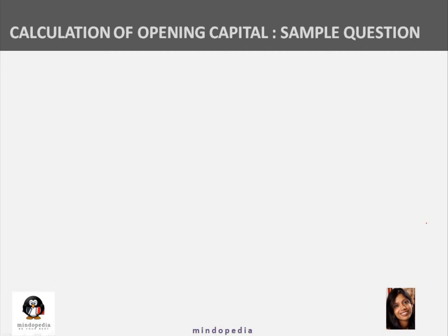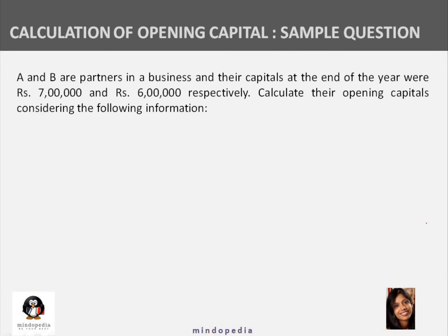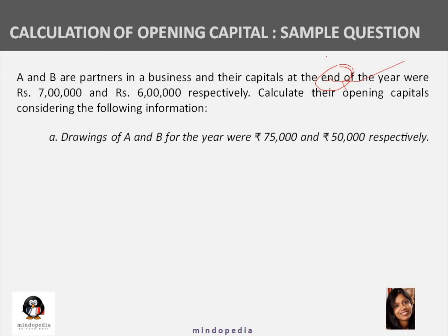Now let us do a sample question. A and B are two partners. Their capital at the end of the year were 7 lakhs and 6 lakhs respectively. Drawings made during the year: A drew 75,000 and B drew 50,000. B introduced additional capital of 1 lakh during the year.